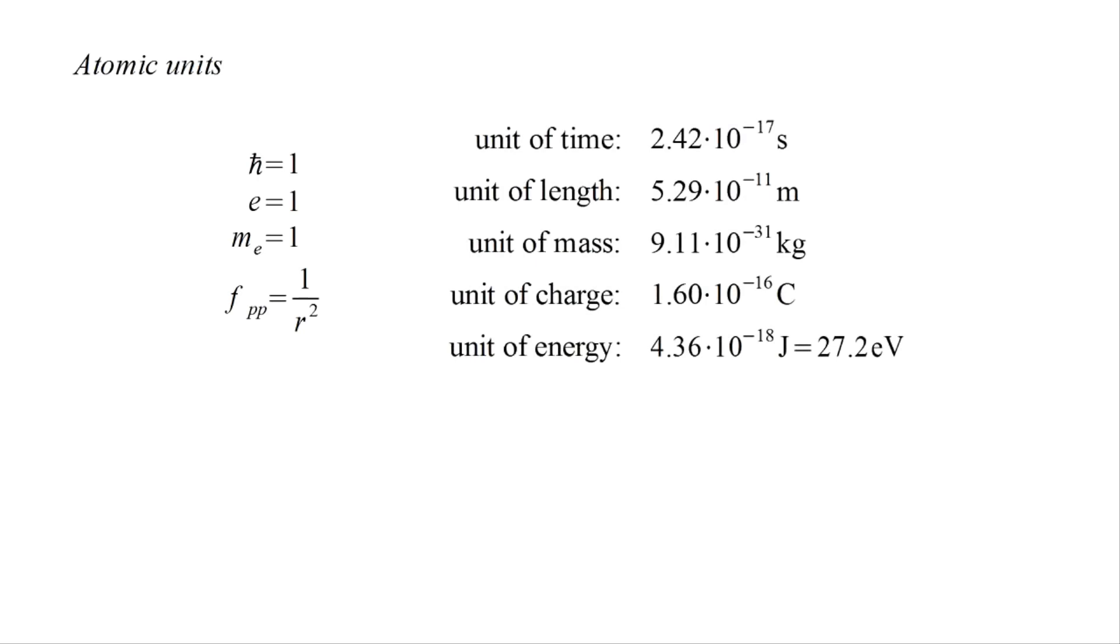To get these conditions, the units of time, length, mass, charge, and energy have to be those shown here. In particular, the unit of length is the so-called Bohr radius, 5.29 times 10 to the minus 11 meters, the nominal radius of the hydrogen atom. In atomic units, the Schrödinger equation for the hydrogen atom has the following simplified form.